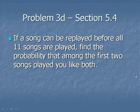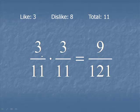Now we're going to go back through these three problems, adding in the idea that the songs can be replayed before reaching the end of the CD. Basically, this is sampling with replacement. To find the probability you like the first two songs, you like three of the 11. When the next song is generated, there are still three songs that you like of the 11 on the CD. Multiply that out to get 9 out of 121.